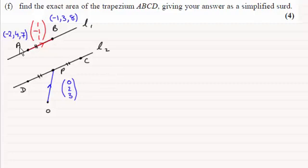I've also updated the diagram with the coordinates of A. The position vector of A was (-2, 4, 7), but I've written the coordinates as (-2, 4, 7) like this. Similarly for B it's (-1, 3, 8). Remember we've got the vector AB: (1, -1, 1), which we worked out in the very first part of this question. And we've also got the position vector of P, the midpoint of DC. Its position vector was (0, 2, 3).